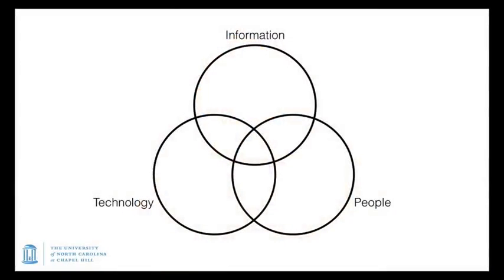So in this field, we tend to think of information science as having three parts: information, technology, and people.